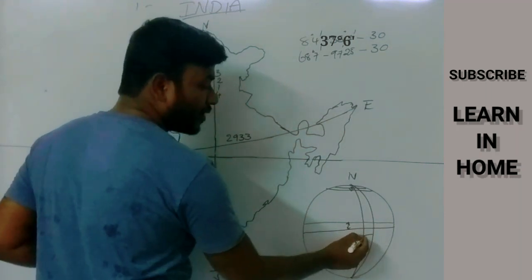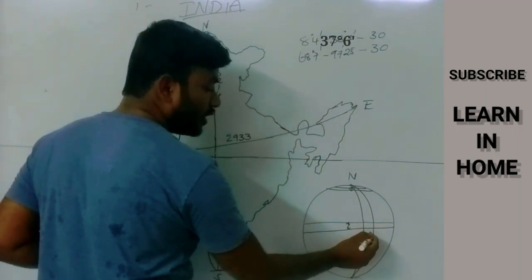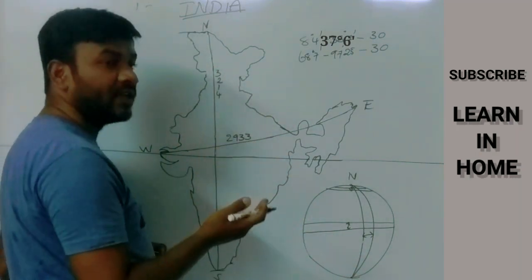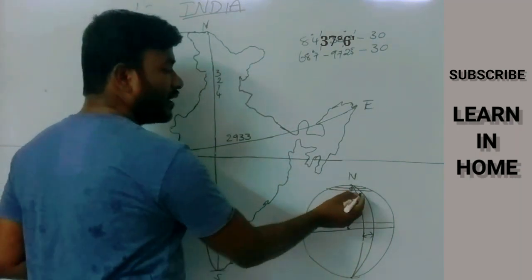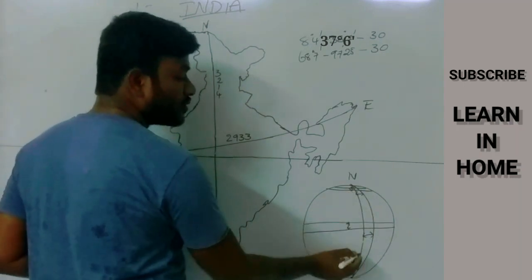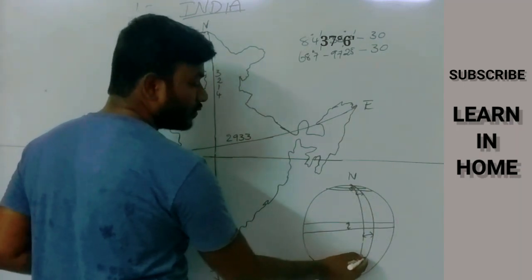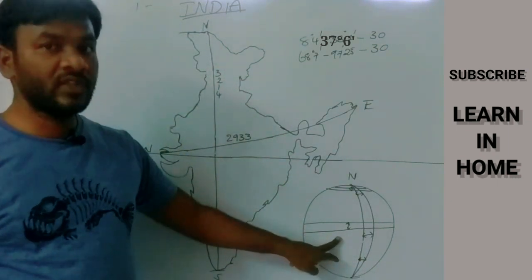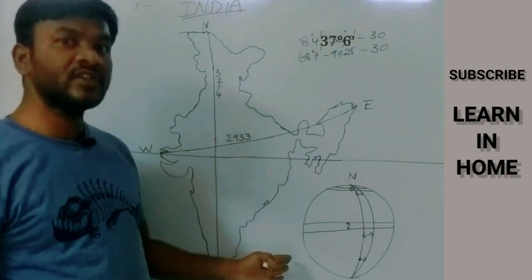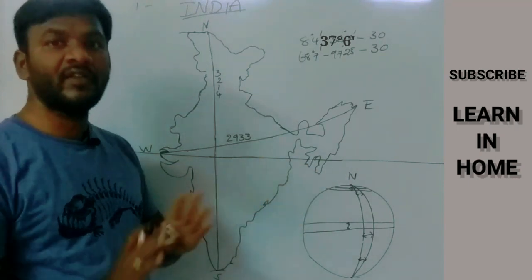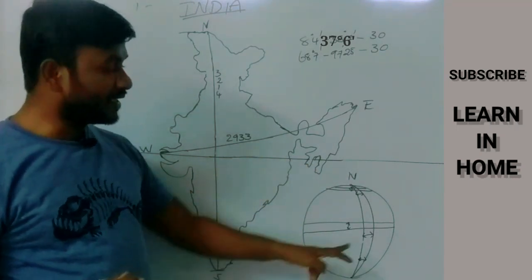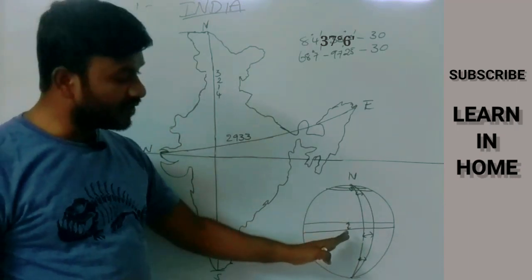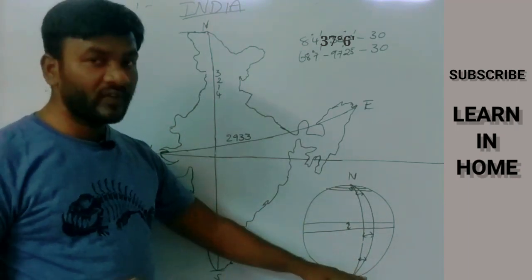At the equator, the distance between the longitudes is at its maximum. But as you move north or south away from the equator, the distance between the longitudes reduces. So in the central part of India, the distance between longitudes is more, but it decreases as you move toward the poles.